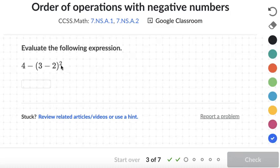Once again we'll do the exponent first. Actually we need to do what's inside parentheses first. So the four tags along for now. 3 minus 2 equals 1. Now we do the exponent, so we have 4 minus 1 squared. 1 squared equals 1 times 1. So 4 minus 1 equals 3.